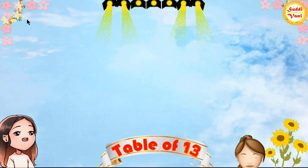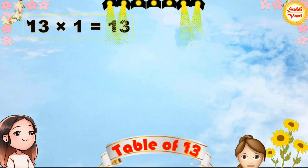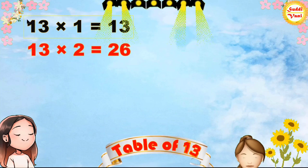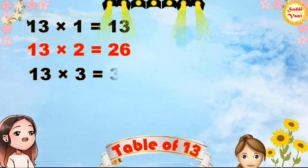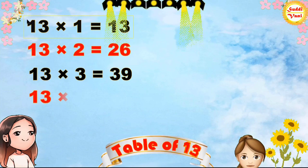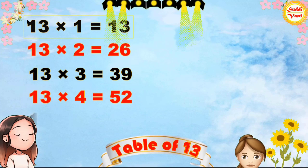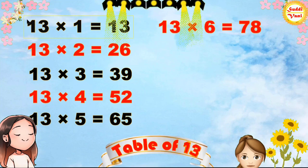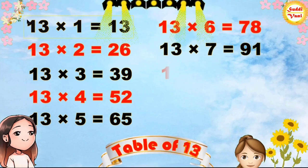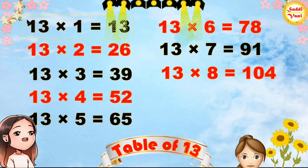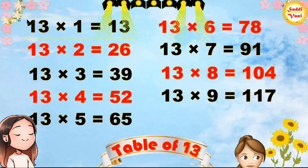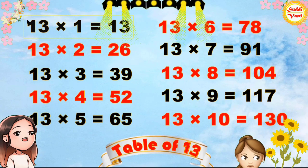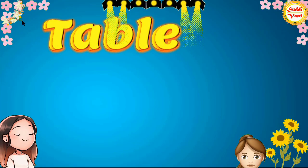Hello children, we will learn table of 13. Once again: 13×1=13, 13×2=26, 13×3=39, 13×4=52, 13×5=65, 13×6=78, 13×7=91, 13×8=104, 13×9=117, 13×10=130.